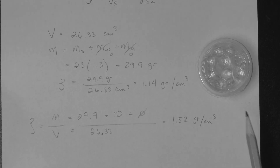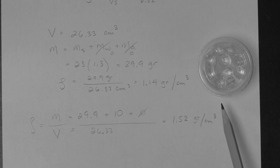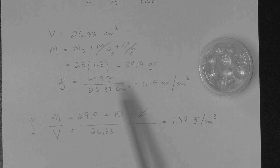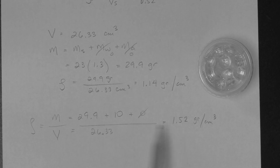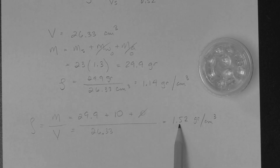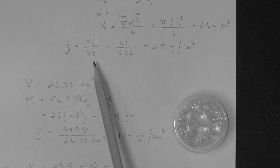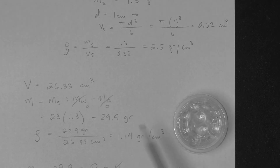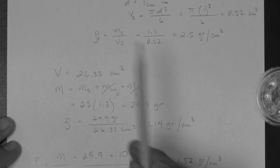Adding water to the soil increases the density because water has a higher density than does air. So 1.14 is the density of the dry soil and 1.52 is the density of the moist soil — a little bit higher, but still lower than the mass density of the solid material making each grain, which is the mass density of solids at 2.5.